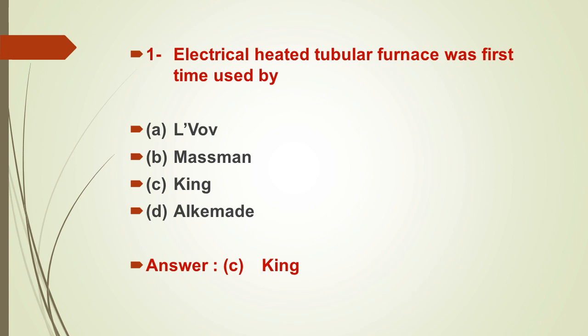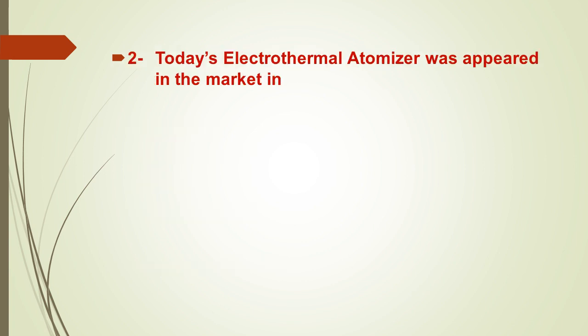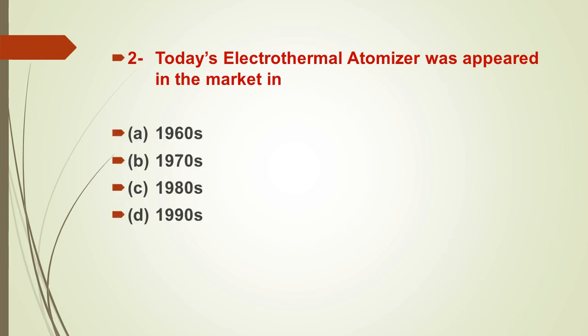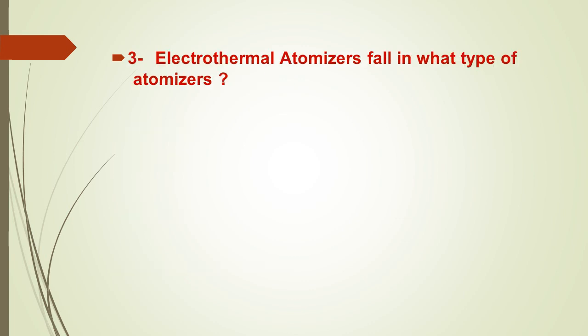Here is the second MCQ: today's electrothermal atomizer appeared in the market in — options are: A) 1960s, B) 1970s, C) 1980s, D) 1990s. The right answer is B, which is 1970s. The modern electrothermal atomizer we use today appeared in the market in the 1970s.